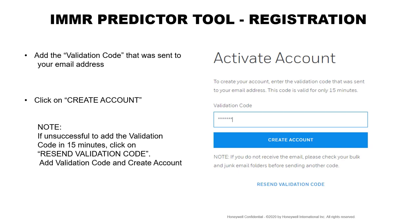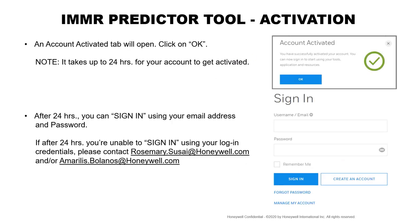If you are unsuccessful in adding the validation code within 15 minutes, please resend the validation code and add in the new validation code to create an account. An account activation tab will pop up — click OK. It takes up to 24 hours for your account to get activated. After 24 hours, you should be able to sign in using your email address and password. If after 24 hours you're unable to sign in, please contact the email address shown here.